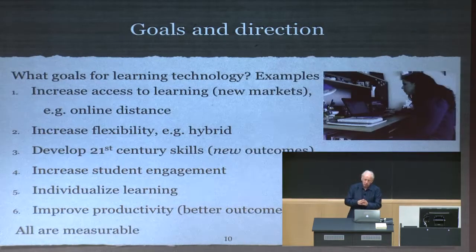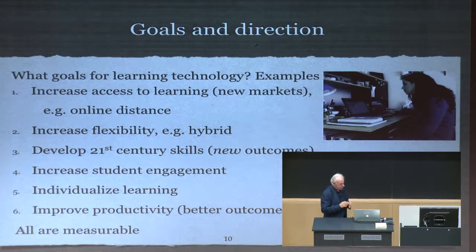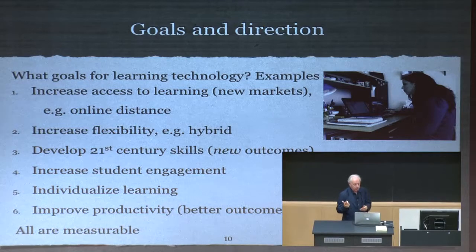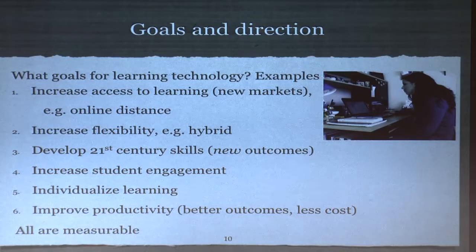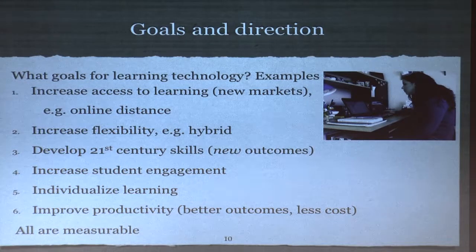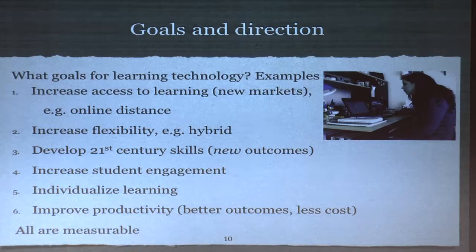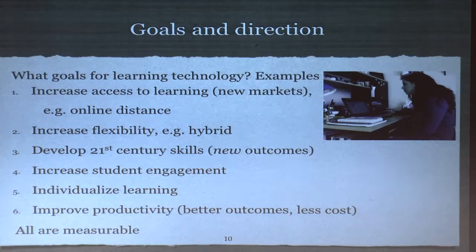What would be a typical goal? There are lots of different goals and you need to clarify which one is most important. First: increase access to learning — new markets — and that's where online distance education is particularly good. There's a huge market in Canada in the credit-based professional development market for those who've already graduated and are out in the workforce. This is the fastest area of growth in the United States in online learning — master's programs for teachers, health service people, engineers — often fully cost-recoverable but credit-based.